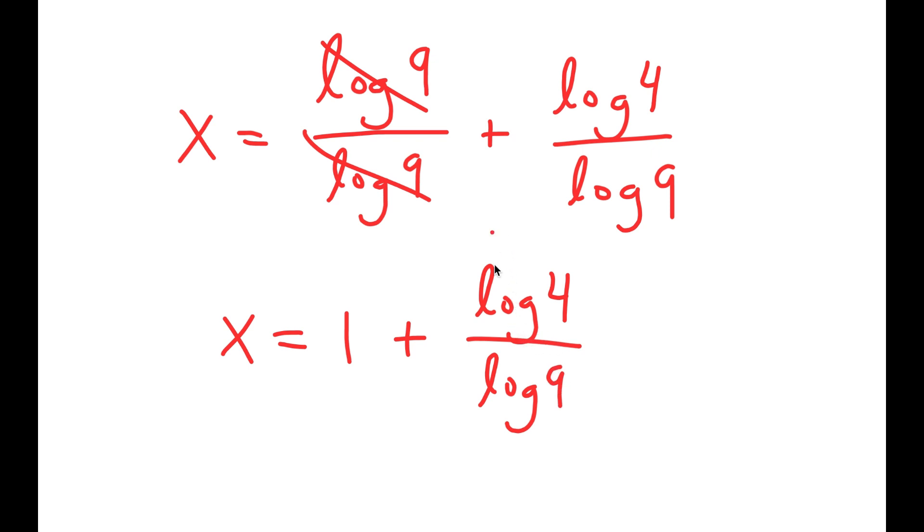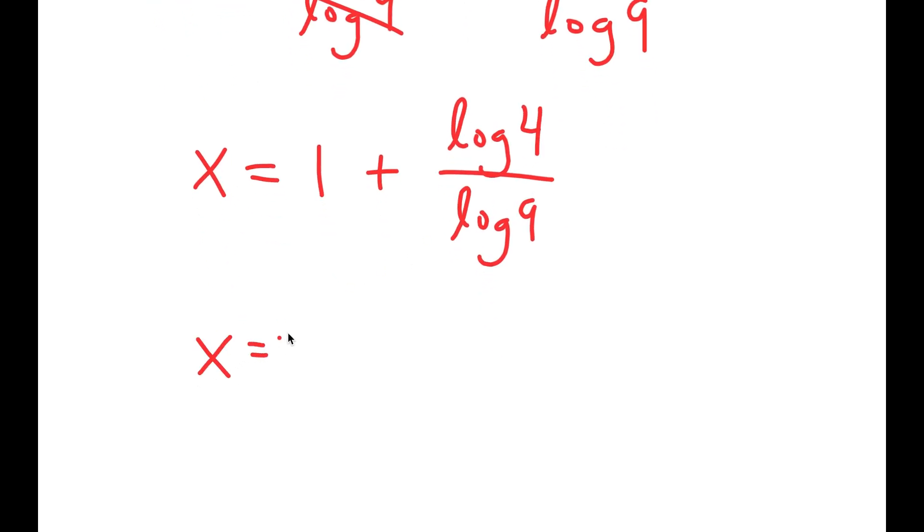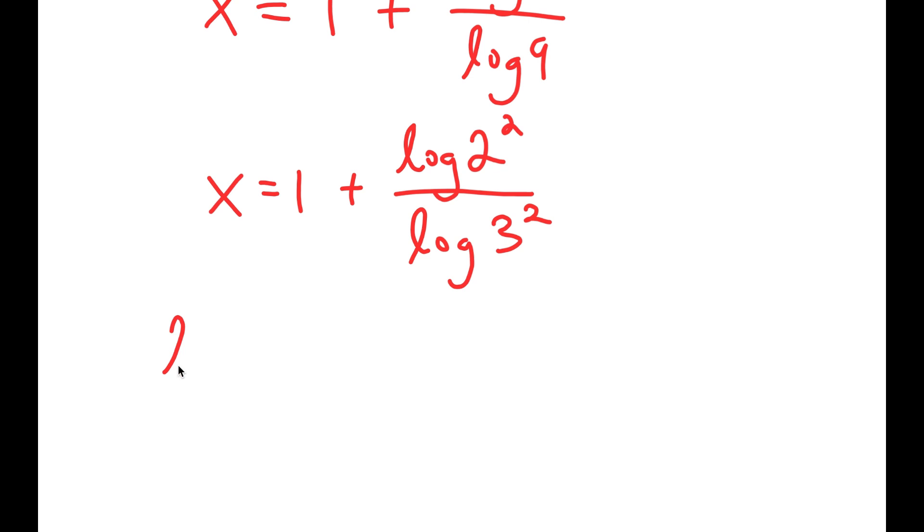Now, from here, I'm going to simplify this by rewriting log 4 as log of 2 squared, because 4 is equal to 2 squared. And I'm going to do the same thing to log 9. I'm going to rewrite it as log of 3 squared. So now, remember that if I have something in the form log a to the power of b, this is equal to b times log a, because I can move b to the front. So I'm going to be reusing this property on these two terms.